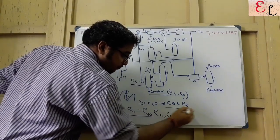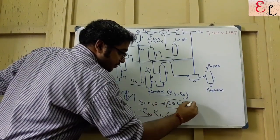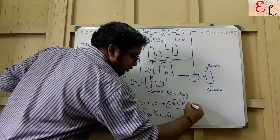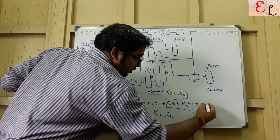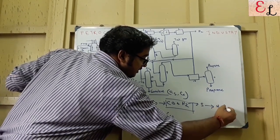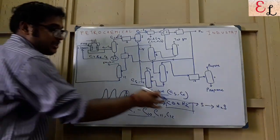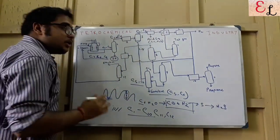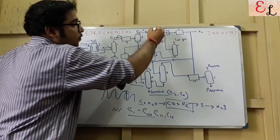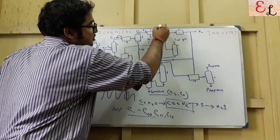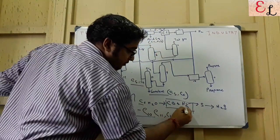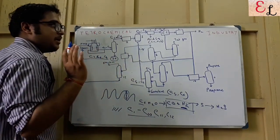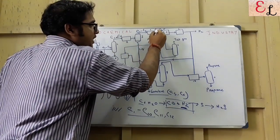What survives after separation through the liquid separator is C1 to C4, along with acid gases produced due to the steam reforming process. If some sulfur is present in the feedstock, H2 combines with it to form H2S, which is also an acid gas. So CO, H2, and H2S are all present and must be separated. When acid gases are separated, what comes out is pure C1 to C4 along with hydrogen, since only CO and H2S are removed and hydrogen is retained.